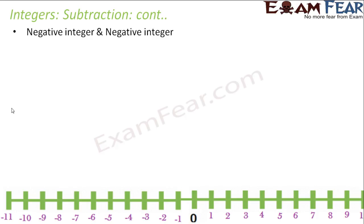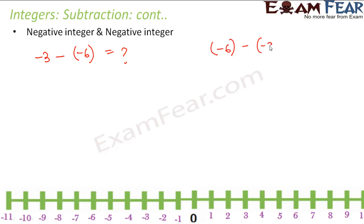So the only tip you need to remember is: whenever you are performing subtraction, you are actually adding the additive inverse of the number to be subtracted. Now let's look at the last scenario — subtracting two negative integers. Say you have minus 3 minus minus 6. You are at minus 3 and you are trying to subtract a negative integer — removing a negative habit — which is the right thing to do. So you move towards right, 6 jumps, and you arrive at 3. So the result would be 3.